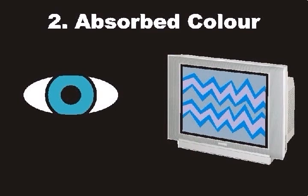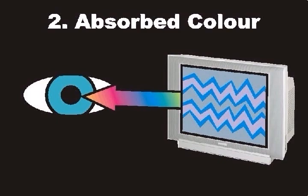Sometimes we see color that has not been reflected before it enters our eyes. Different colors of light can be mixed in a similar way as when we mix paint to get different colors. Television is a good example of this. Color that enters our eyes directly without first reflecting off any object is called absorbed color.